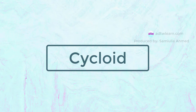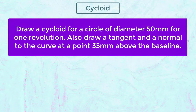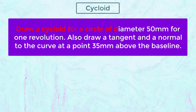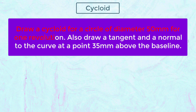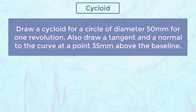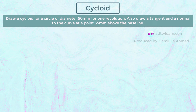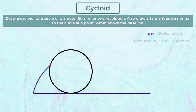Today in this video we will see how to draw a cycloid for a given circle. The instructions are: draw a cycloid for a circle of diameter 50 millimeters for one revolution, and also draw a tangent and a normal to the curve at a point 35 millimeters above the baseline. A cycloid is a curve traced by a point on a circle being rolled along a straight line.